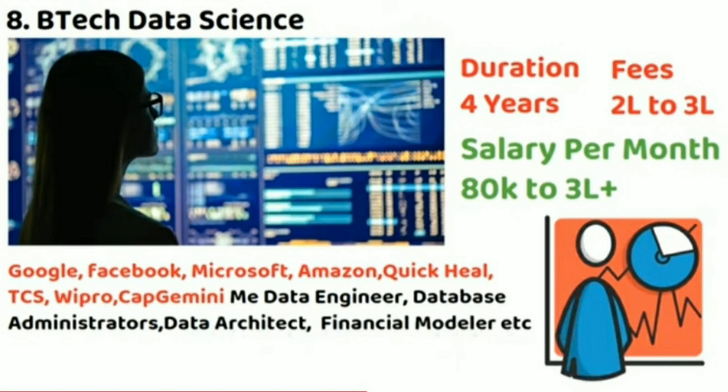The next branch is Data Science. Fees are 3 to 2 lakhs per year. Salary is 80,000 to 3 lakhs. Companies hiring include Google, Facebook, Microsoft, Amazon, TCS, Wipro, and Capgemini. Job roles include data engineer, database administrator, and data architect.